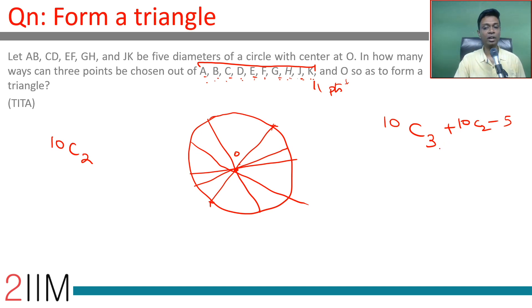So, 10C3: 10 × 9 × 8 divided by 1 × 2 × 3. 10C2: 10 × 9 divided by 2, minus 5. This is 120 plus 45 minus 5, which equals 160.